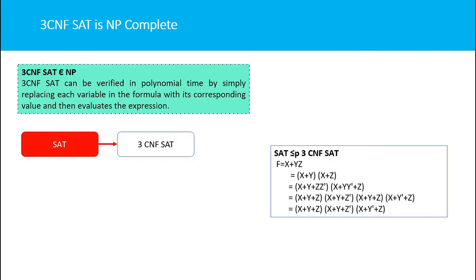Next we have to prove that 3CNF SAT is NP-hard. We already know that the satisfiability problem is NP-complete. So if we are able to reduce the satisfiability problem to the 3CNF SAT problem, then we can say 3CNF SAT is NP-hard. And since 3CNF SAT is both NP and NP-hard, it is NP-complete. So we have to reduce SAT to 3CNF SAT.